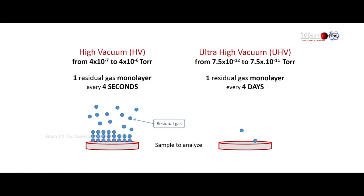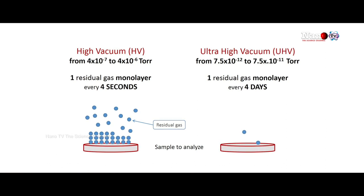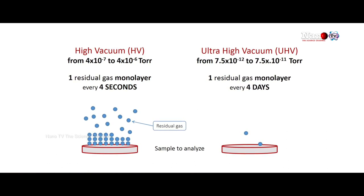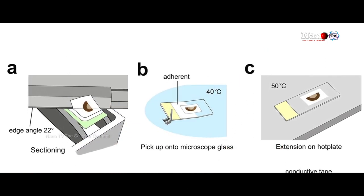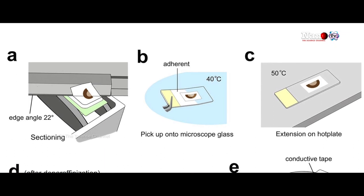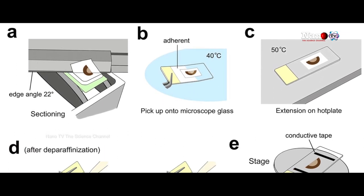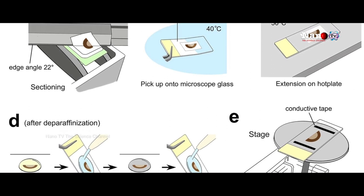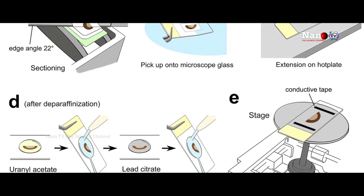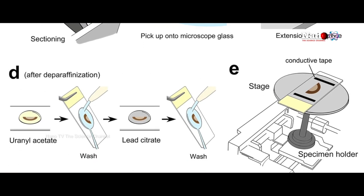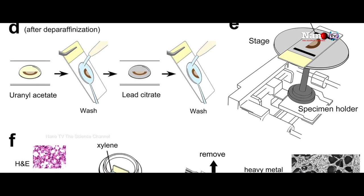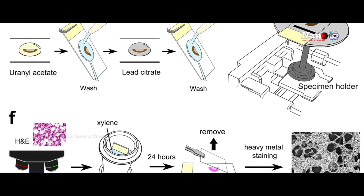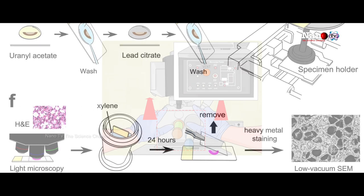All these microscopes work under high vacuum, that is 10 to the power minus 5 torr. Many times we cannot put samples under vacuum — they will start degassing, some materials will start evaporating, and some materials which have oily substances will keep on coating. So it is very important that we change the atmosphere. In general, SEM requires very high vacuum, but this new technology allows us to work without very high vacuum.